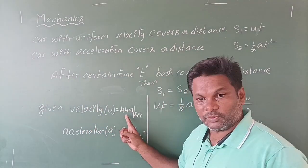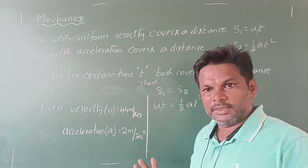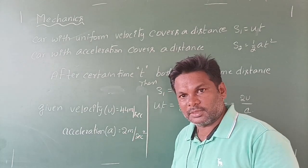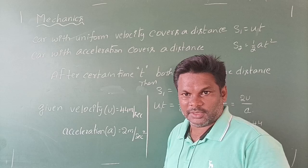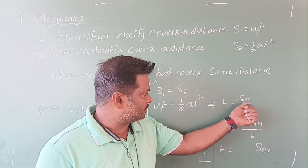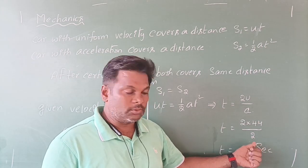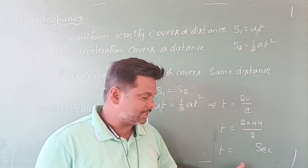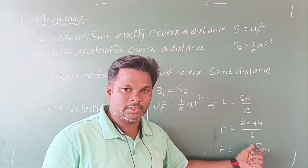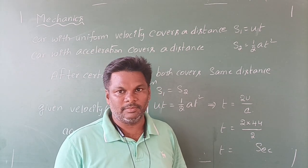In your problem, the velocity u = 44 m/s and acceleration a = 2 m/s². Substituting these values into the formula t = 2u/a gives t = 2 × 44 / 2. Just do this calculation and you will get the answer.